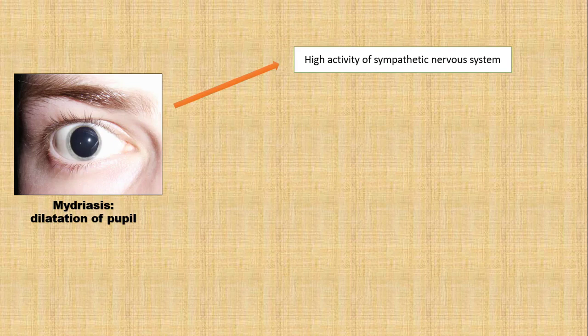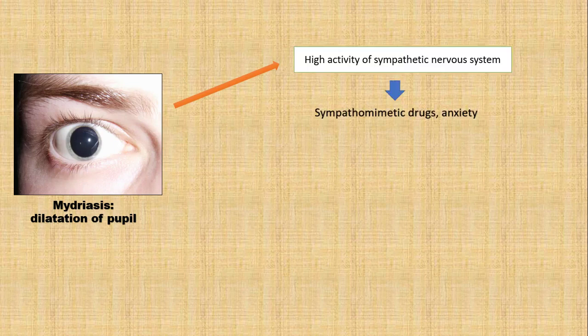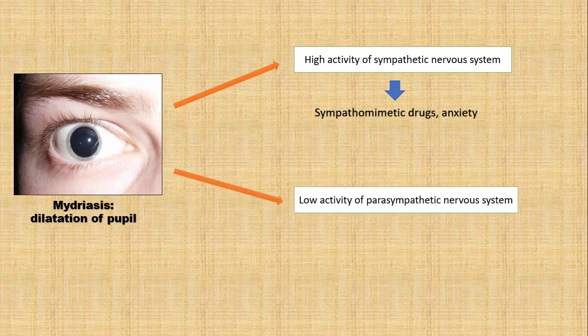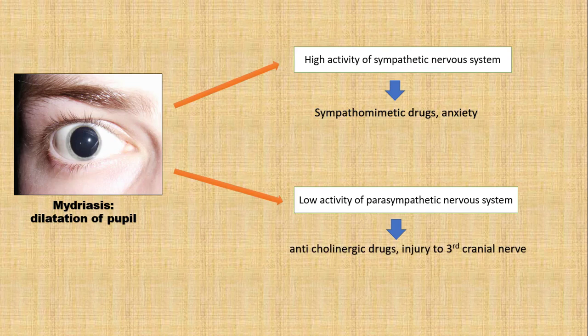Mydriasis is dilatation of the pupil. It can occur due to high activity of the sympathetic nervous system, for example from sympathomimetic drugs or anxiety, and also due to low activity of the parasympathetic nervous system, such as from anticholinergic drugs or injury to the third cranial nerve or oculomotor nerve.